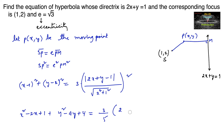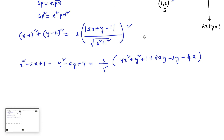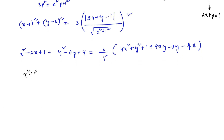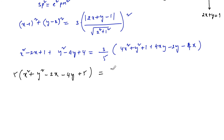Expanding (2x plus y minus 1) whole square using the identity (a plus b plus c) whole square equals a square plus b square plus c square plus 2ab plus 2bc plus 2ac, we get 4x square plus y square plus 1 plus 4xy minus 2y minus 4x. Then simplifying the left side: x square plus y square minus 2x minus 4y plus 5, and doing cross multiplication gives 5 times the left side equal to 3 times the expanded bracket.